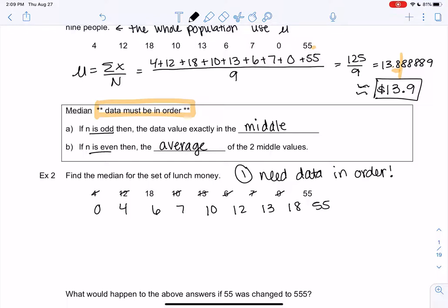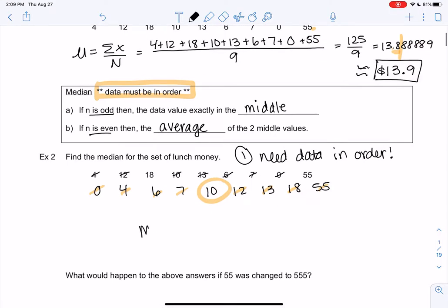And we just kind of find the middle. Maybe you cross off or you can visually see the middle. And it looks like 10 is right in the middle. So it's literally the middle value. The median equals $10. Basically half the friends brought less and half the friends brought more than $10.